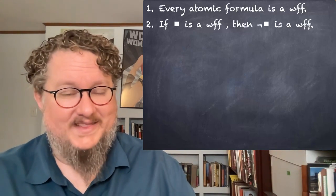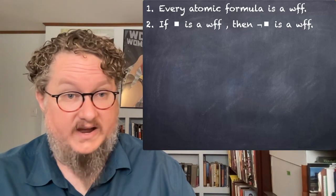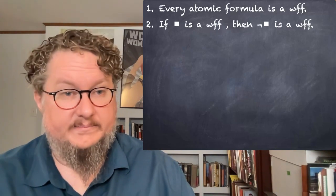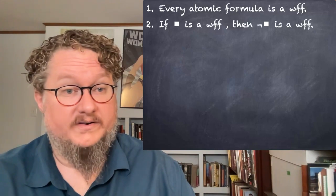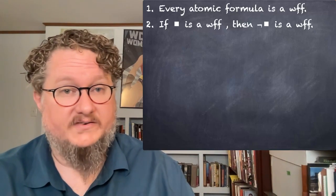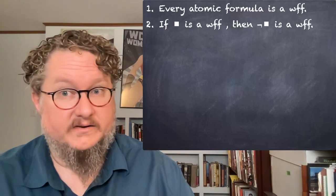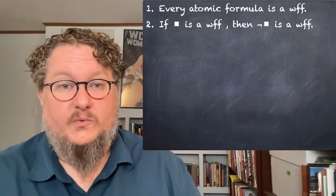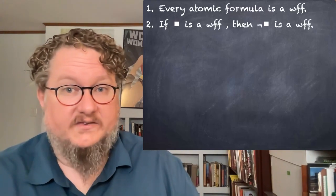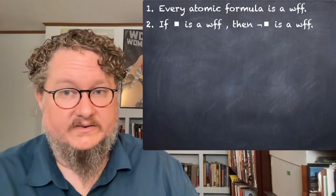Instead of using script letters here, I am going to use shapes, squares and circles, as my meta variables for sentences. Just to highlight that we're not talking about predicate letters, we're just talking about expressions. So if square is a wff, then not square is a wff. That's the negation rule.